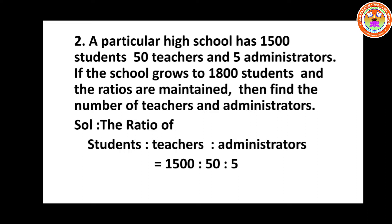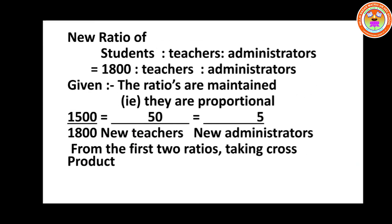Now the solution. The ratio of students to teachers to administrators is 1500 is to 50 is to 5. The new ratio for 1800 students: students is to teachers is to administrators — we know there are 1800 students but we don't know the number of teachers and administrators. The ratios are maintained, meaning they are proportional. So 1500 divided by 1800 equals 50 divided by new teachers, which equals 5 divided by new administrators.